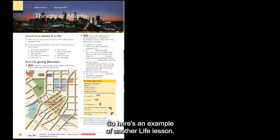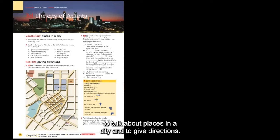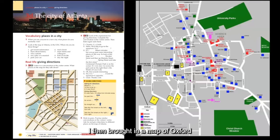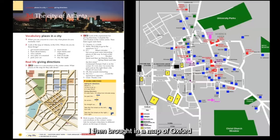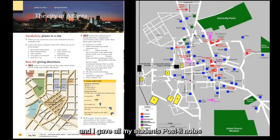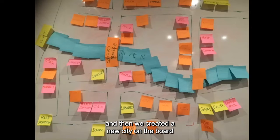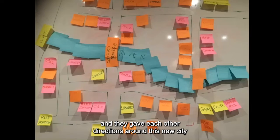Personalization isn't just about students answering questions about their own lives — it's also about personalization of content. Here's an example: a Life lesson on vocabulary for places in a city and giving directions. I was using this material with my students in Oxford. The book used Atlanta as the context, so once we'd done the page work, I brought in a map of Oxford. Students looked at places in Oxford and gave each other directions. Then I gave them all post-it notes to write their five favorite places, and we created a new city on the board.